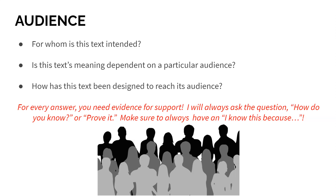Next we have audience — very, very important. We have to ask: for whom is this text intended? Who is meant to be reading this? Is the text's meaning dependent on that particular audience? Is it going to be more difficult for one audience to understand than another? Is it phrased in a specific way so that an audience can understand it most easily? And how has this text been designed to reach its audience — what has the creator, the writer, the artist done to specifically appeal to that audience? What have they included or not included in the piece to make it work for that audience?